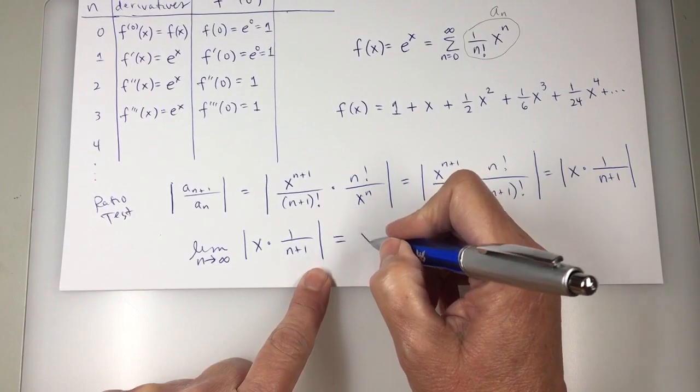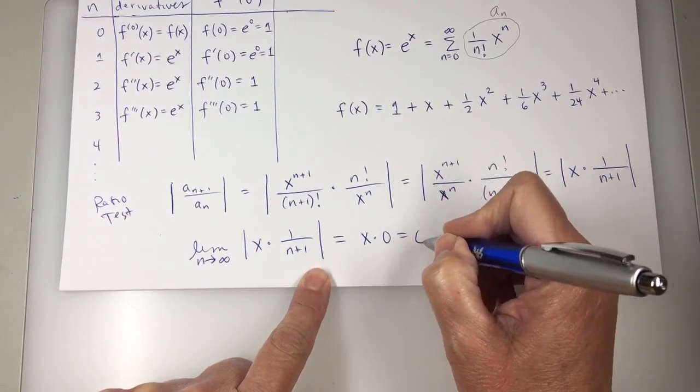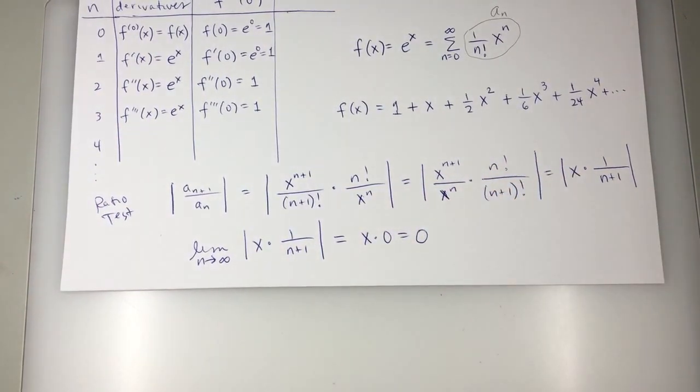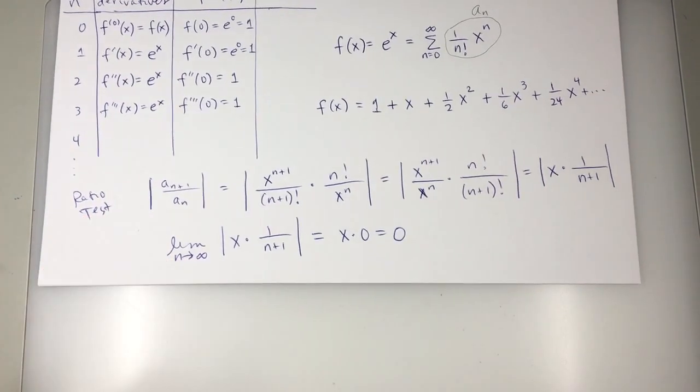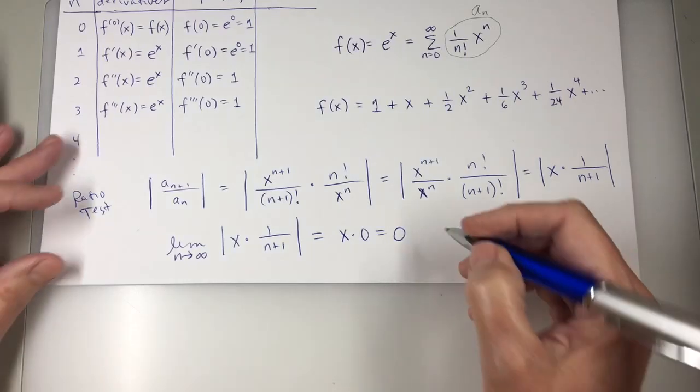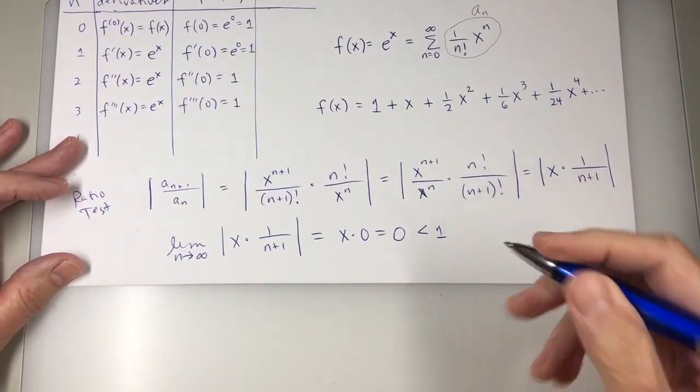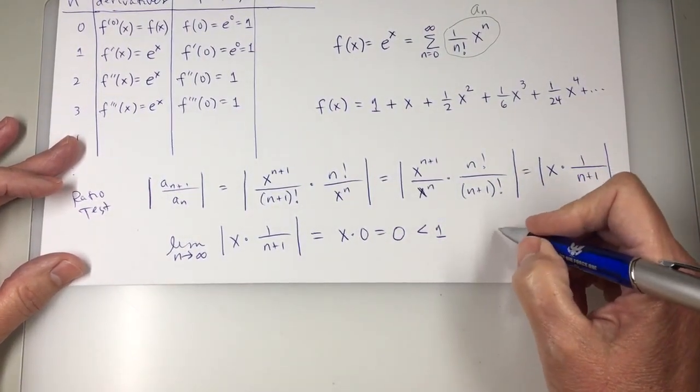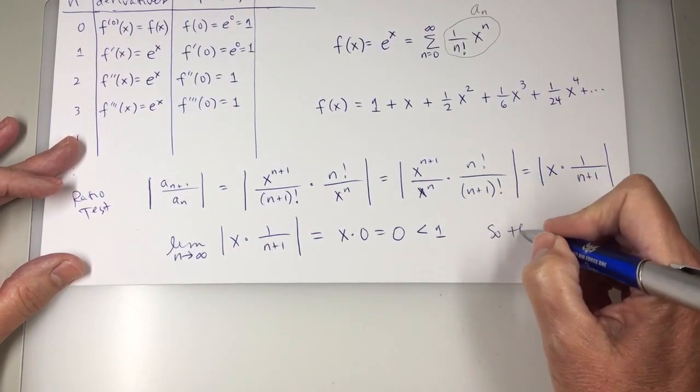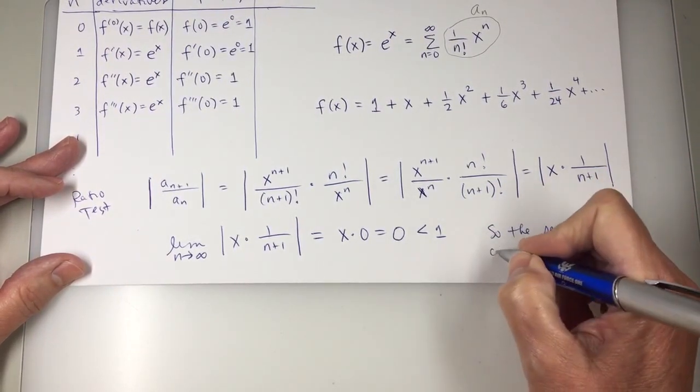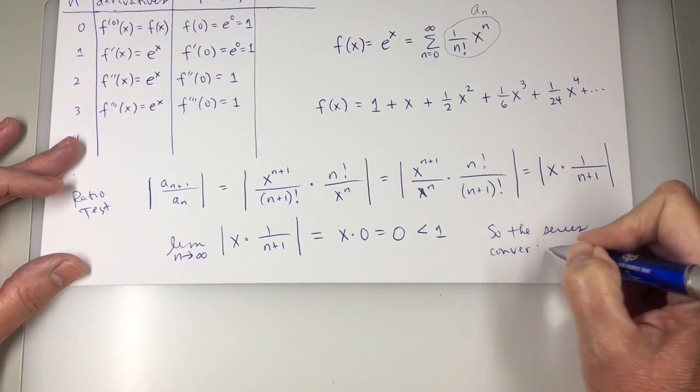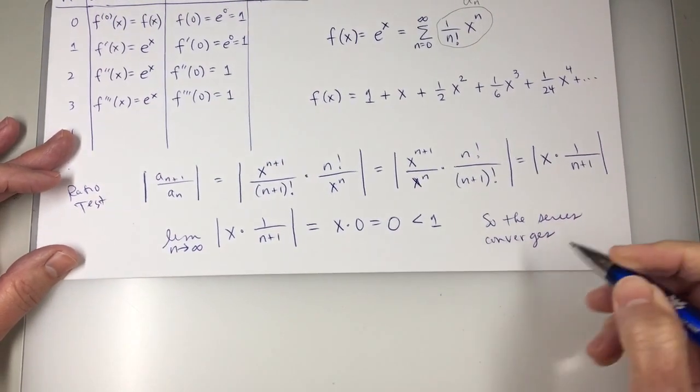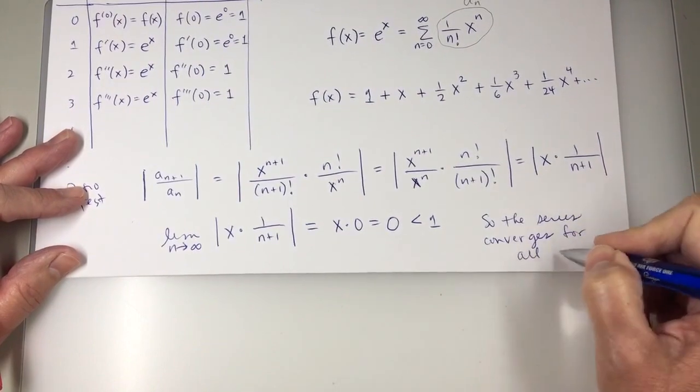So I'll write x times 0, which is 0. So according to the ratio test, what happens? It converges. This is less than 1. So it converges. The ratio test says converges absolutely, but that also means converges. So the series converges. It doesn't matter what x is. It converges for all x.